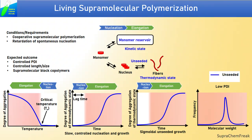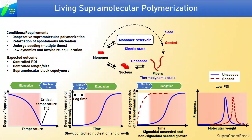The requirements for living supramolecular polymerization are as follows. The thermodynamic state should follow cooperative supramolecular polymerization mechanism, and there should be retardation of spontaneous nucleation depicted by a lag phase and sigmoidal growth. If these two conditions are met, then it is expected that in the presence of a seed — which is an existing supramolecular polymer — the monomers should directly undergo elongation process bypassing the nucleation step, which is depicted by non-sigmoidal growth with no lag phase. This phenomenon is called seeding, similar to seeding in crystallization.